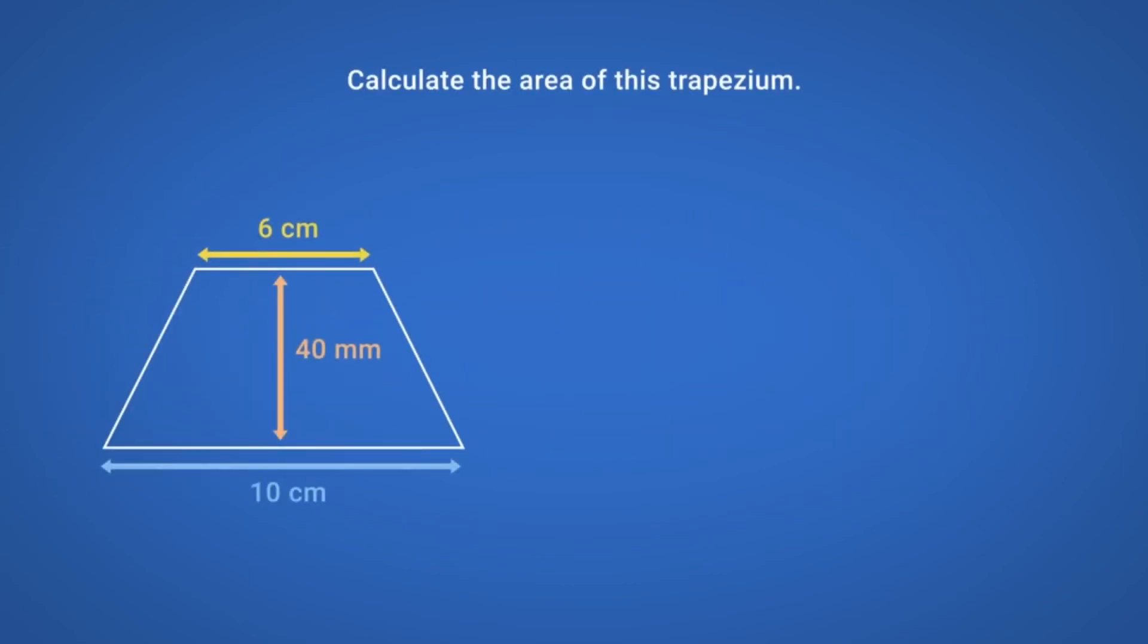Example. Calculate the area of this trapezium. We need to start by first converting 40 mm to 4 cm so all our units are the same. Using the formula A equals (a plus b) divided by 2, multiplied by h,